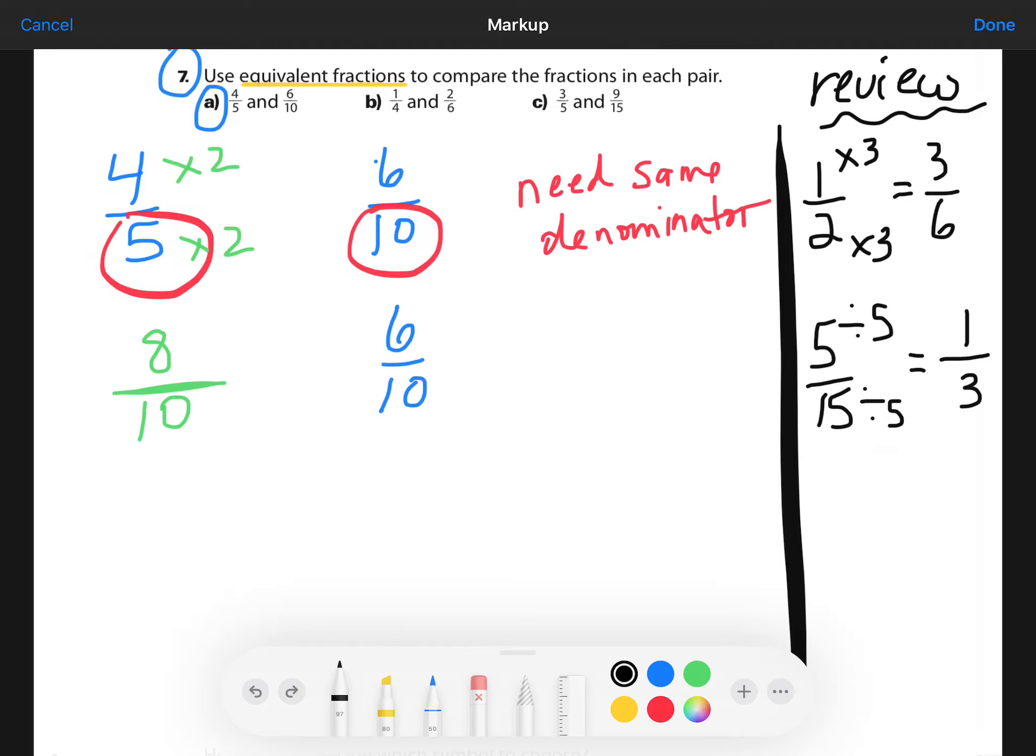So now that we have two, really, we've only made one equivalent fraction. We started with four-fifths. The equivalent fraction is eight-tenths. And now we can compare eight-tenths and six-tenths. They have the same denominator, so all we have to do is look at the numerators. And because eight is greater than six, we know that eight-tenths is greater than six-tenths.